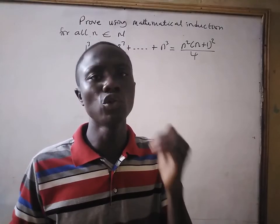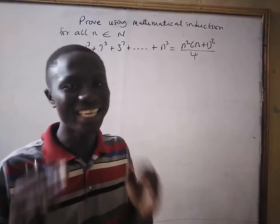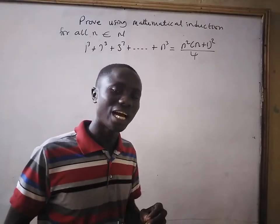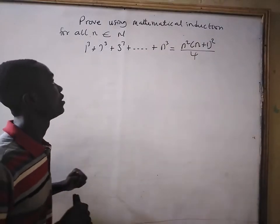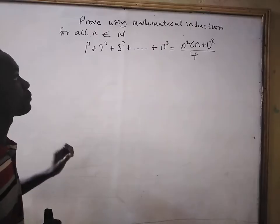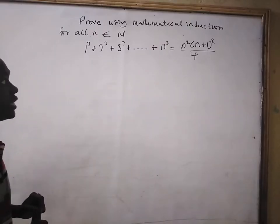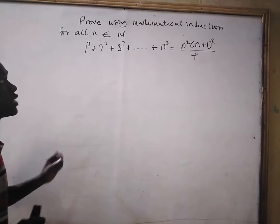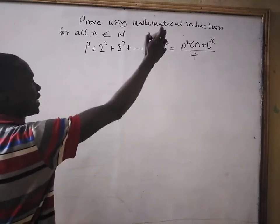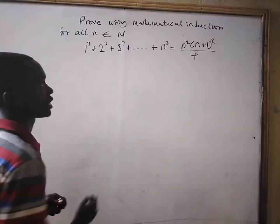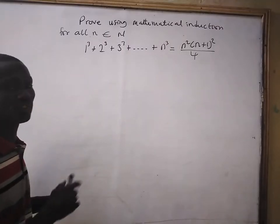In this lesson, you are going to prove using the principle of mathematical induction. Let's go to the question on the board. Proof, using the principle of mathematical induction, for all n in the subset of natural numbers: 1³ plus 2³ plus 3³ plus dot dot dot plus n³ equals n squared times bracket n plus 1 all squared divided by 4.